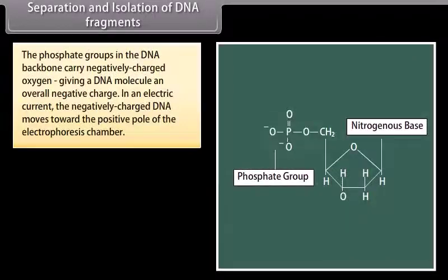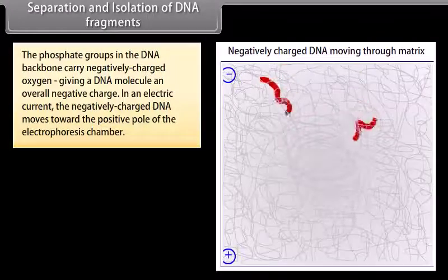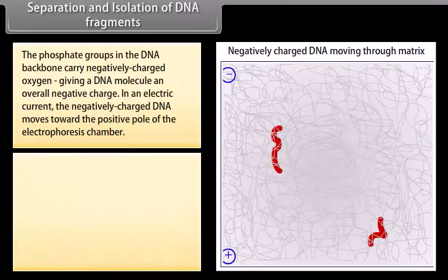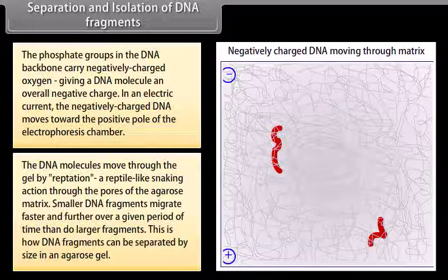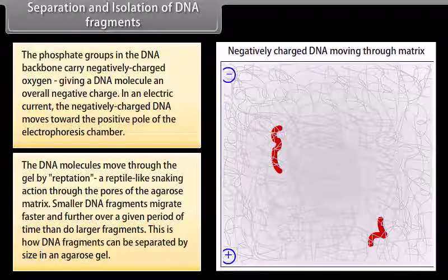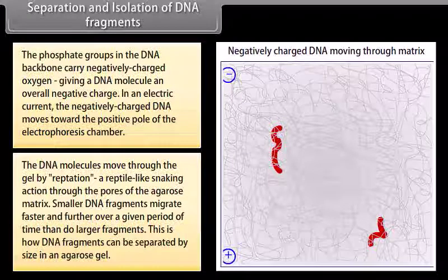This makes it easier to load the samples and visually track the DNA migration through the gel. The phosphate groups in the DNA backbone carry negatively charged oxygen, giving a DNA molecule an overall negative charge. In an electric current, the negatively charged DNA moves towards the positive pole of the electrophoresis chamber. The DNA molecules move through the gel by reptation, a reptile-like snaking action through the pores of the agarose matrix. Smaller DNA fragments migrate faster and further over a given period of time than larger fragments. This is how DNA fragments can be separated by size in an agarose gel.